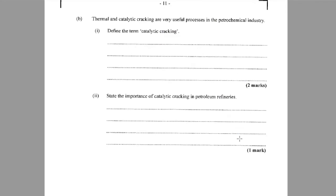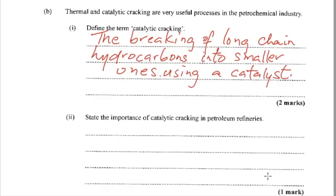Part B. Thermal and catalytic cracking are very useful processes in the petrochemical industry. Part one: define the term catalytic cracking. So this is the breaking of long chain hydrocarbons into smaller ones using a catalyst. Catalytic cracking is the breaking of long chain hydrocarbons into smaller ones using a catalyst.